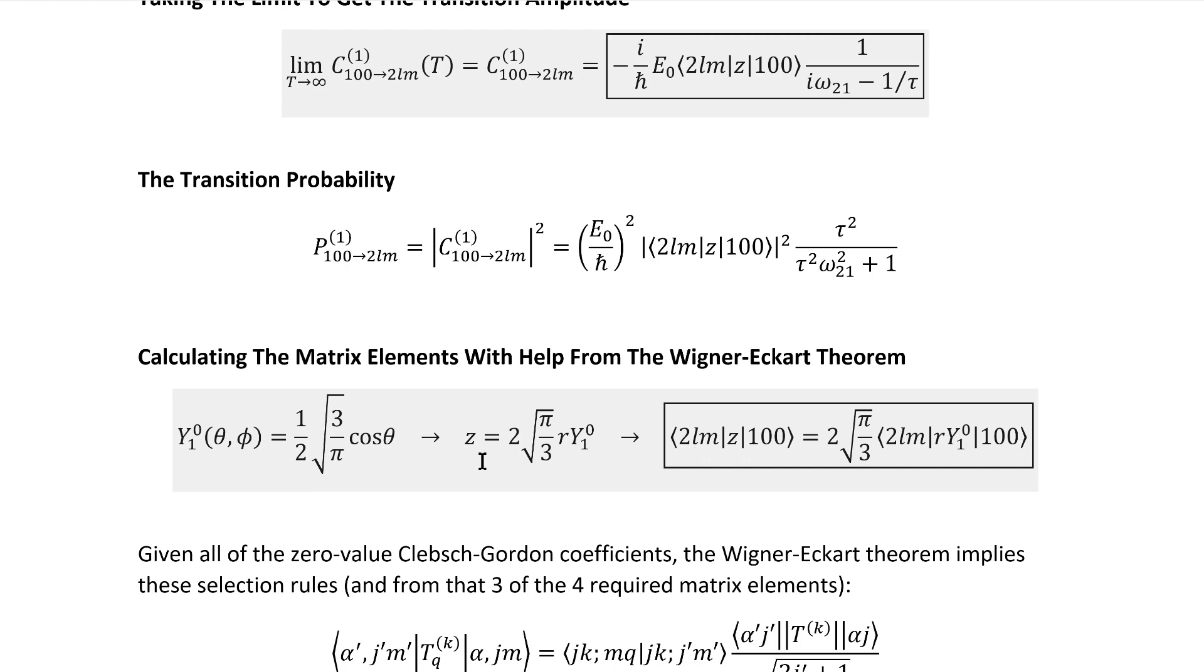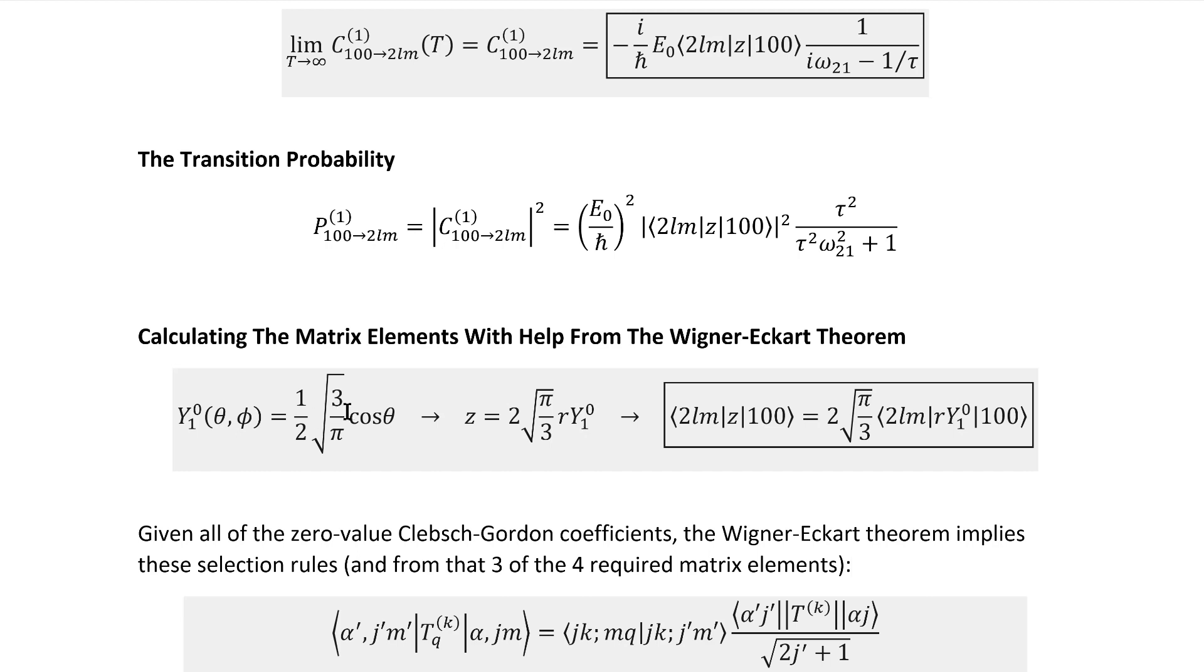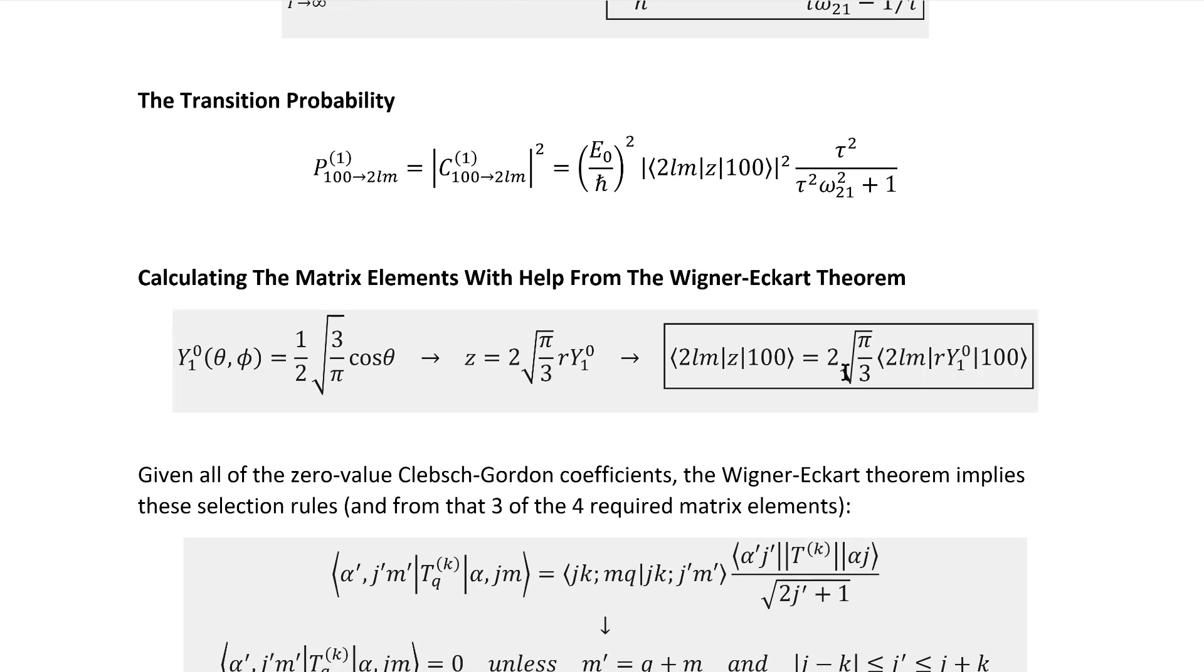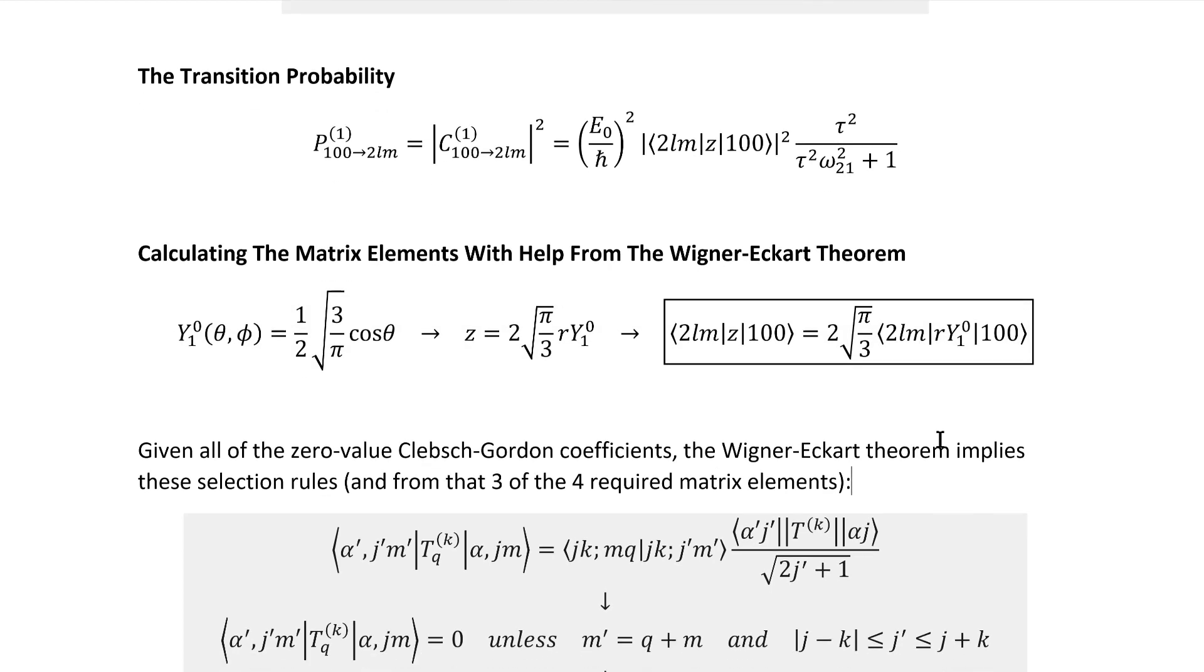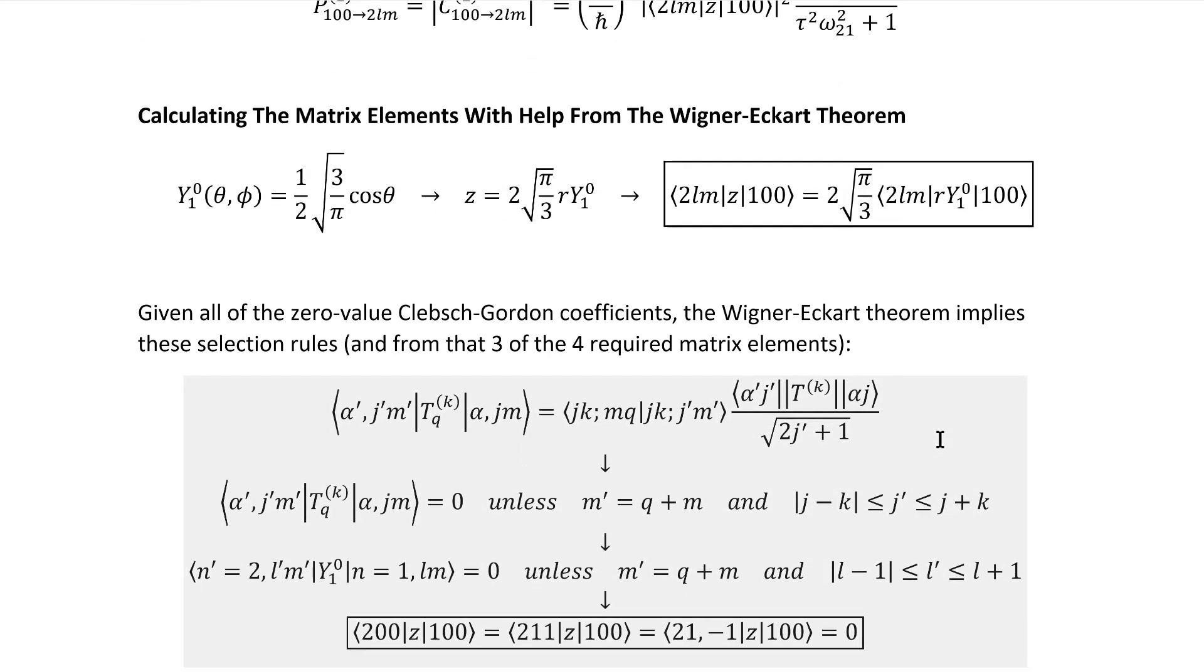Fortunately, that process is really easy because this specific spherical harmonic is almost proportional to Z right away, so no complicated algebraic manipulations are required. And with this result, we're ready to move immediately on to the application of the Wigner-Eckart theorem.